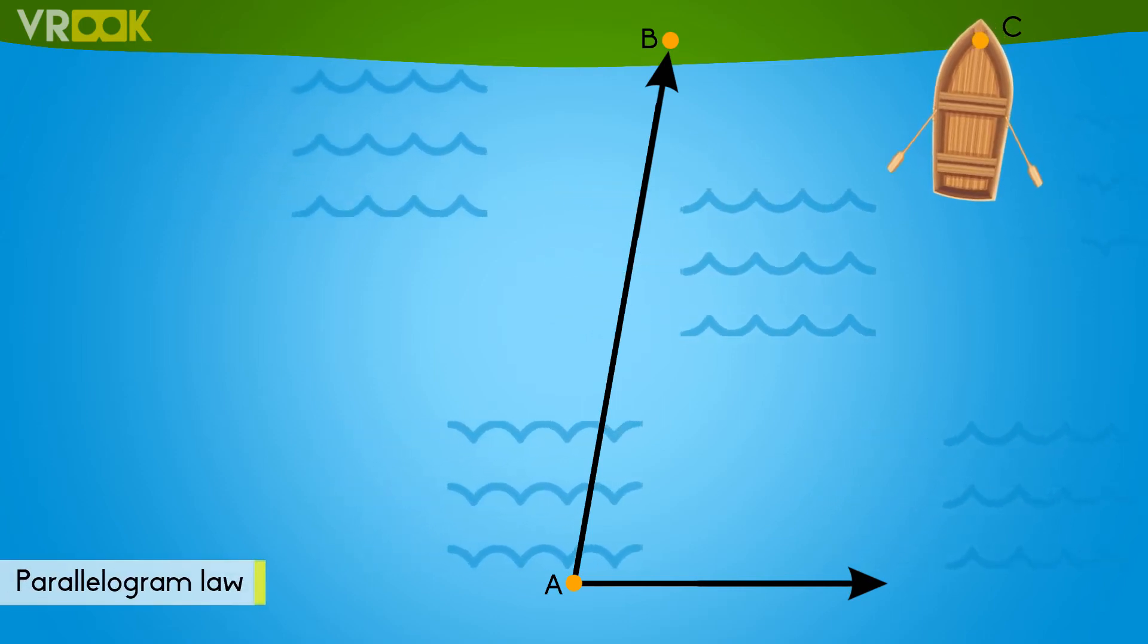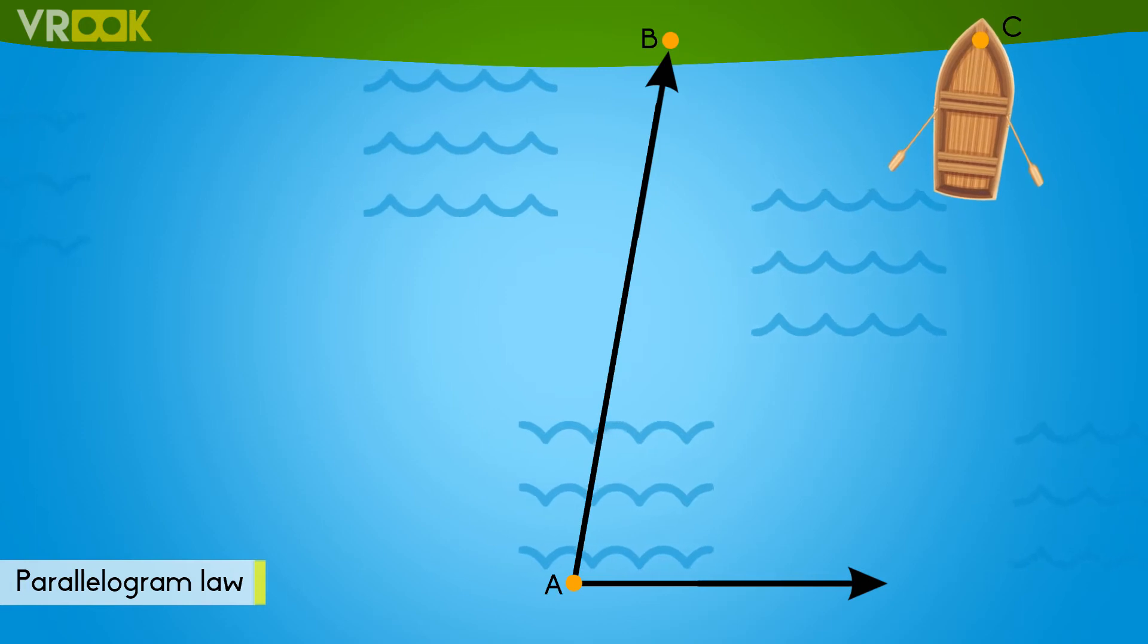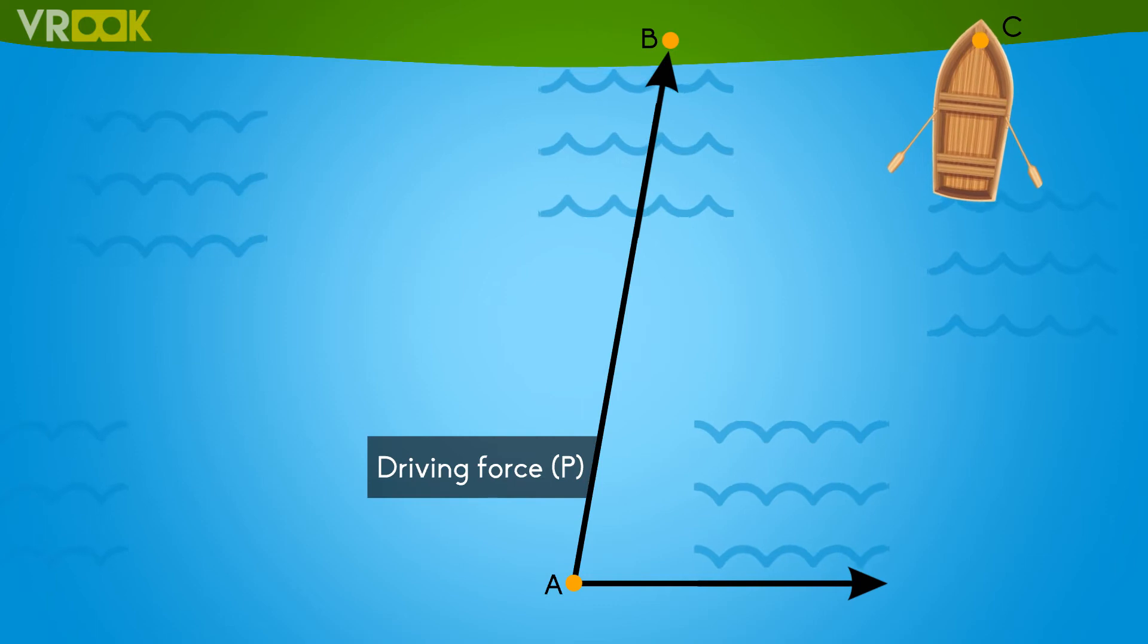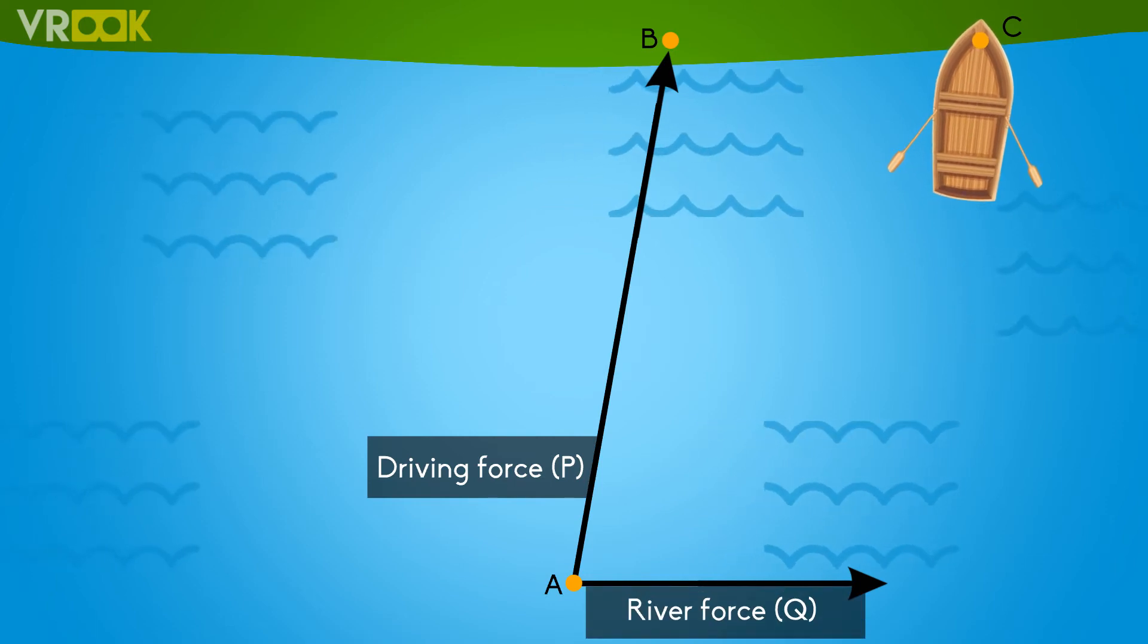Parallelogram law helps us in understanding this problem. Your driving force is considered as force P and the river force towards the right is considered as Q.